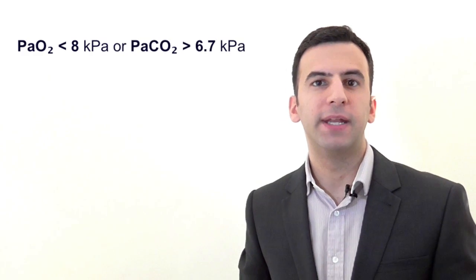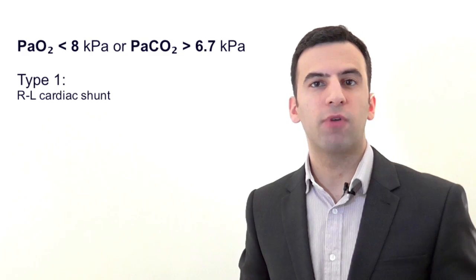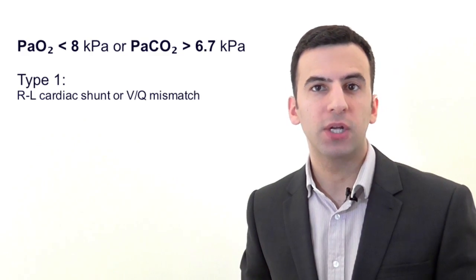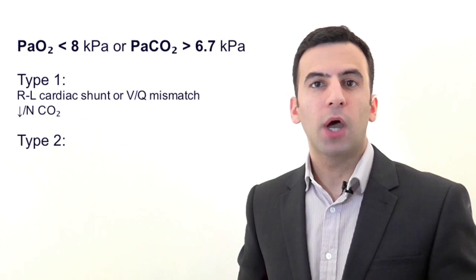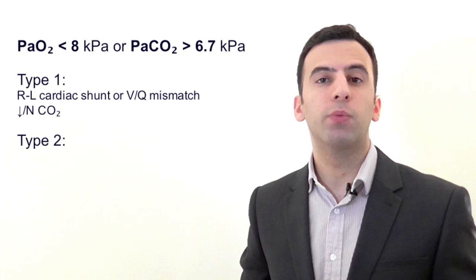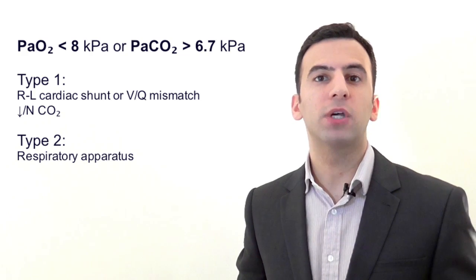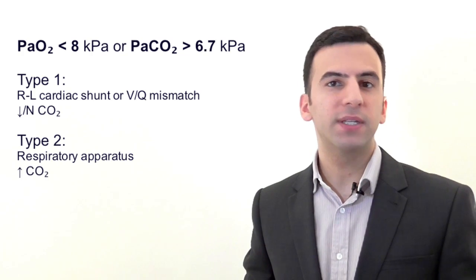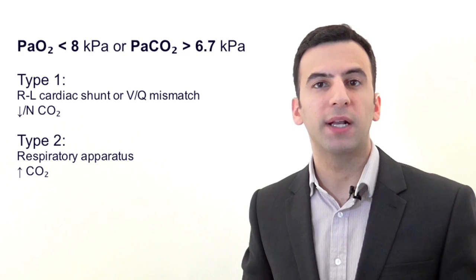In summary, respiratory failure can be defined as an arterial oxygen pressure of less than 8 kPa or an arterial CO2 greater than 6.7 kPa in a patient breathing room air. Type 1 respiratory failure indicates a right-to-left shunt or a ventilation-perfusion mismatch, and will result in hypoxia with a low or normal CO2. Type 2 respiratory failure indicates a problem with one or more areas of the respiratory apparatus causing hypoventilation, and will result in hypoxia with a high CO2. If you understand the concepts behind the numbers, you should be able to make a reasonable list of differential diagnoses.